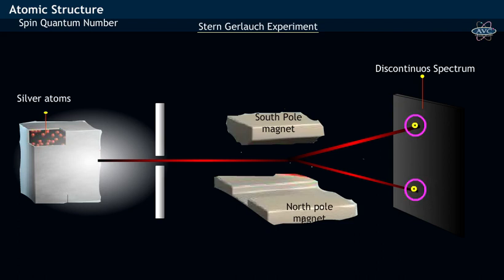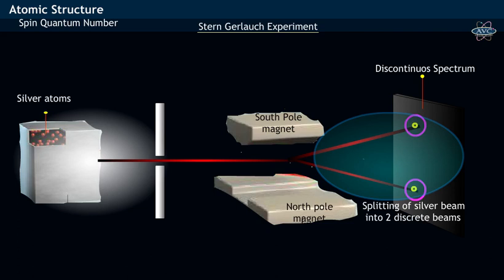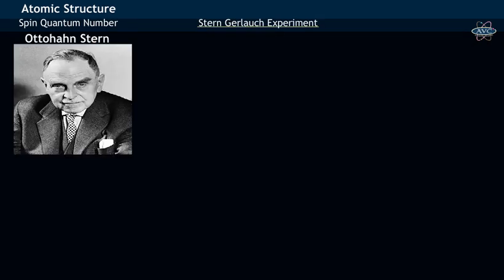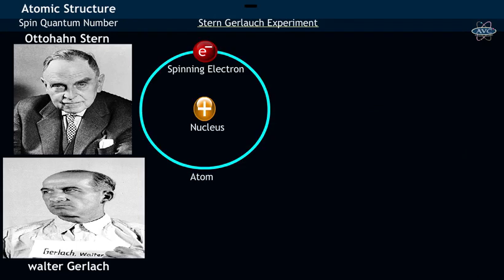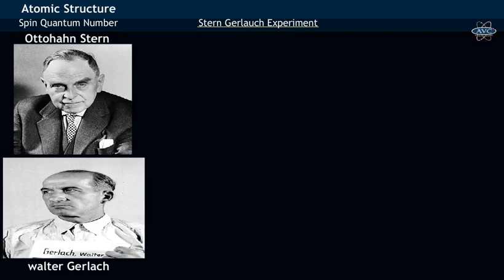In order to explain the splitting of silver single beam into two beams, the idea of spin of electron has been introduced. Both scientists proposed that the spinning electron has two states of spin: spin-up shown by upward arrow, and spin-down depicted by downward arrow.